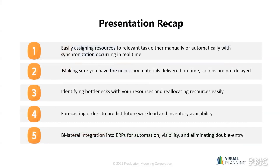To recap, here are the five key features in Visual Planning that we went over. One: easily assigning resources to relevant tasks, either manually or automatically, with synchronization in real time. Two: making sure you have the necessary materials delivered on time so jobs are not delayed. Three: identifying bottlenecks with your resources and giving you the ability to reallocate these resources easily, even automatically. Four: forecasting orders to predict future workload and understand if inventory is available. Five: bilateral integration into ERPs for automation, visibility, and eliminating any risk of double entry.